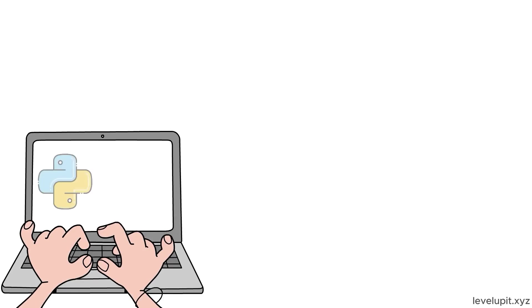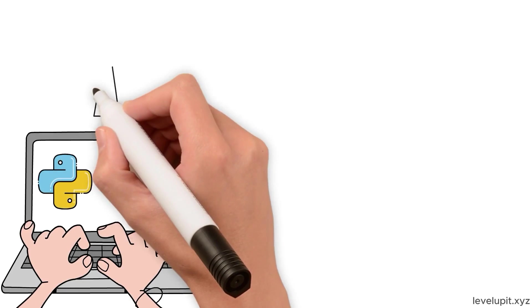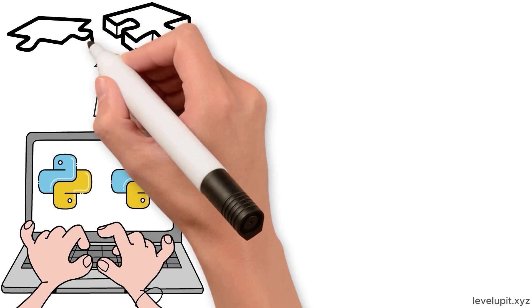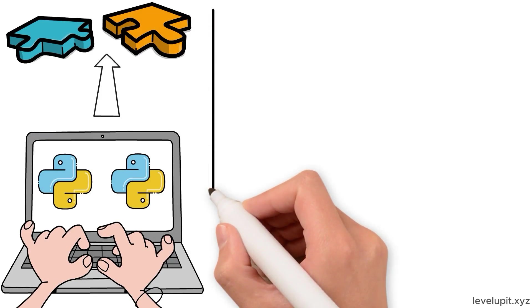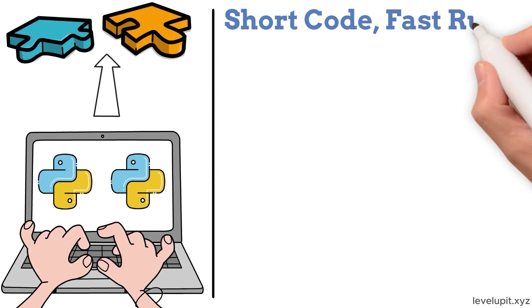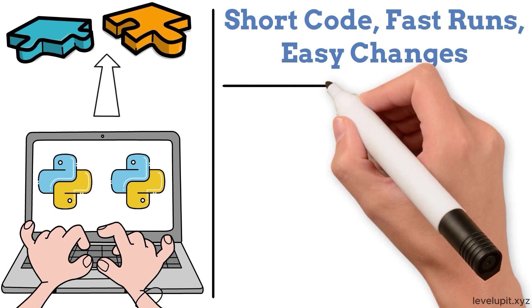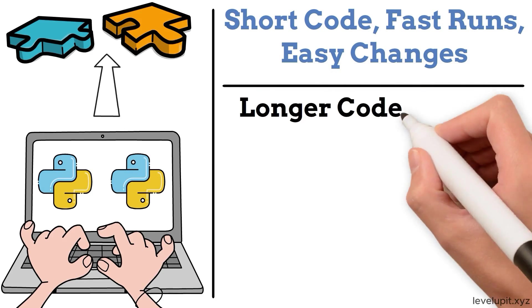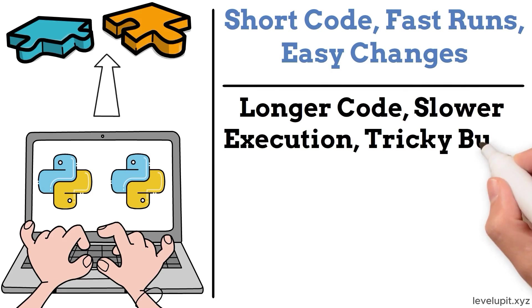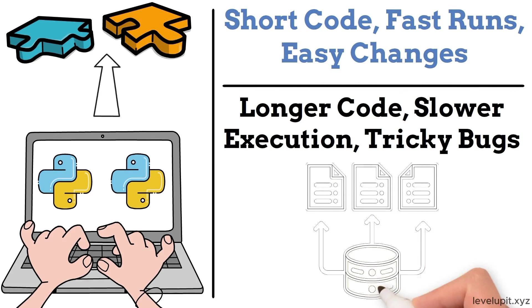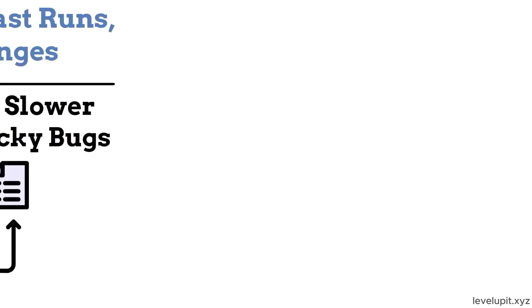Imagine two Python projects built by equally skilled developers. Both solve the same problem. One feels smooth, short code, fast runs, easy changes. The other feels heavy, longer code, slower execution, tricky bugs.